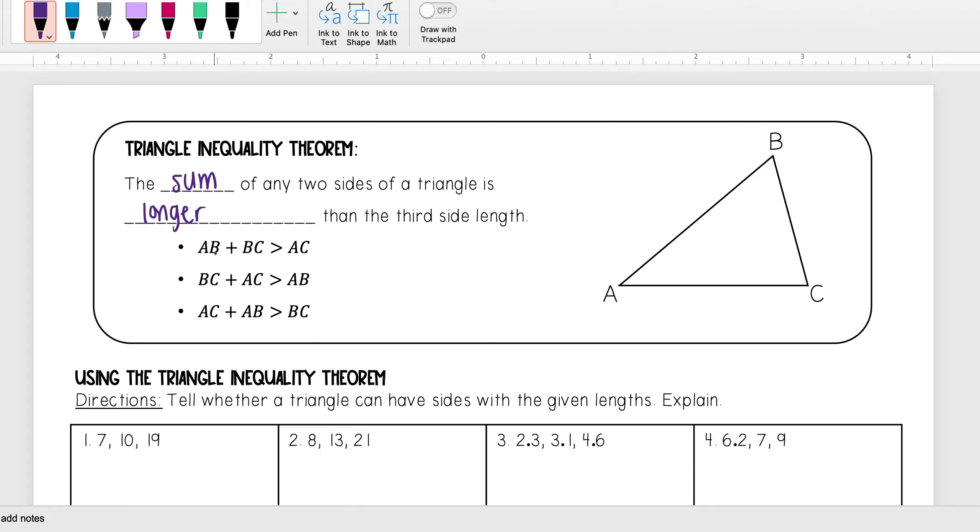And so basically this is telling me if I take any two side lengths, so AB plus BC, BC plus AC, or AC plus AB. So if I take any two of them, add them together, they have to be bigger than that third side length.